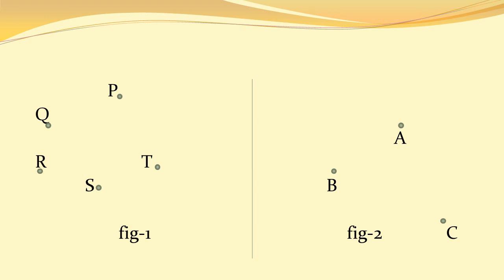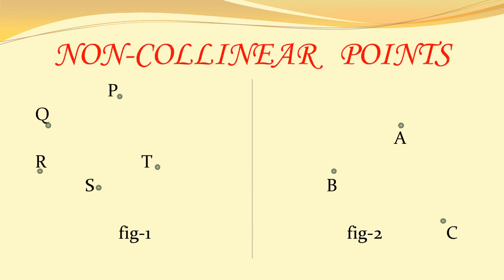So children, what are these points called? Simple, non-collinear points. So children, keep in mind when 3 or more points which do not lie on the same line or they do not form a straight line are known as non-collinear points.